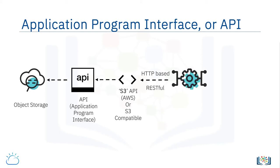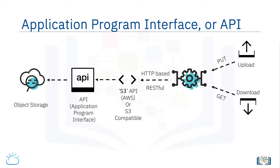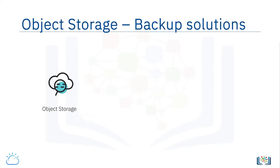The API itself is an HTTP-based RESTful API, or RESTful web service. API calls allow applications to manage object storage and buckets, as well as put (upload) or get (download) objects to and from them.